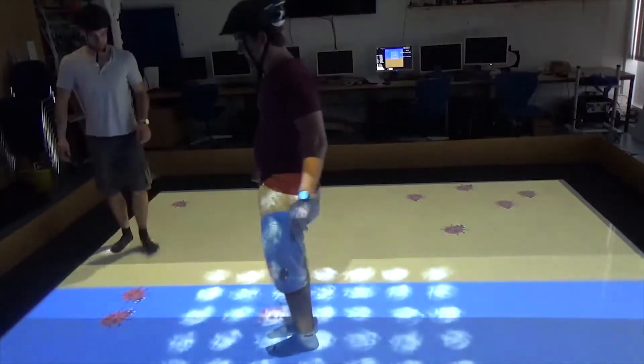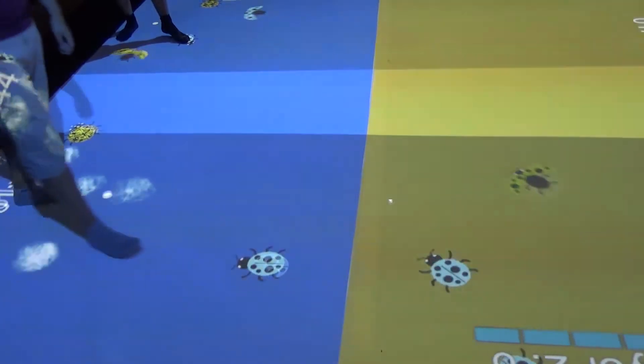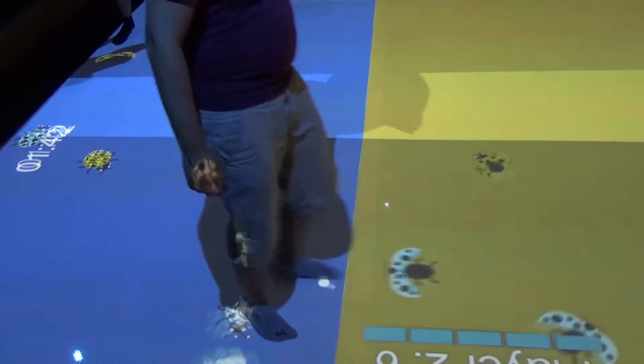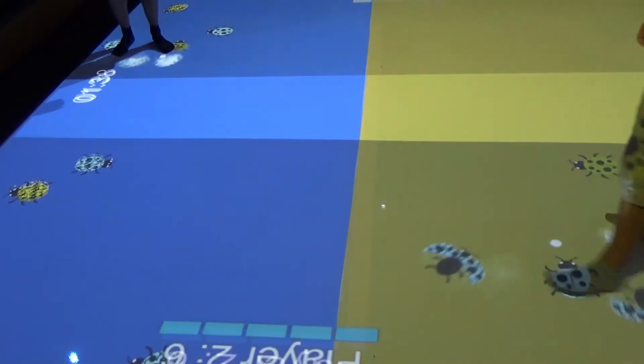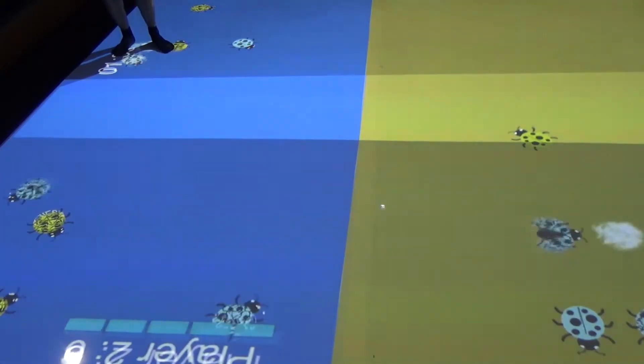The goal of the game was to crush as many bugs as possible. Combining the player's HTC Vive position as well as the pressure-sensitive position of their feet, we were able to track which players killed which bugs.